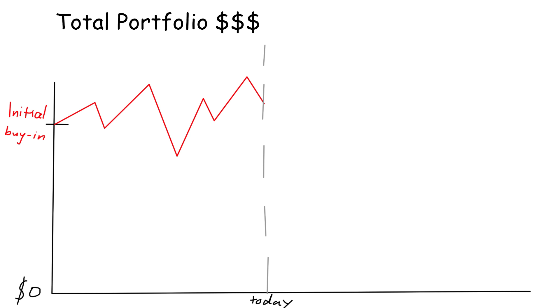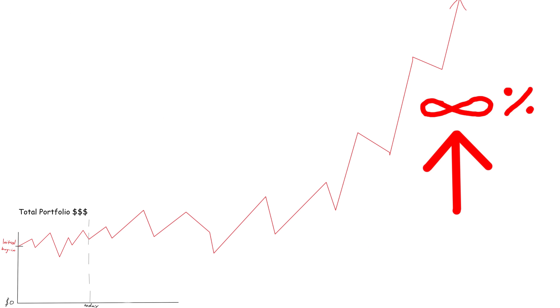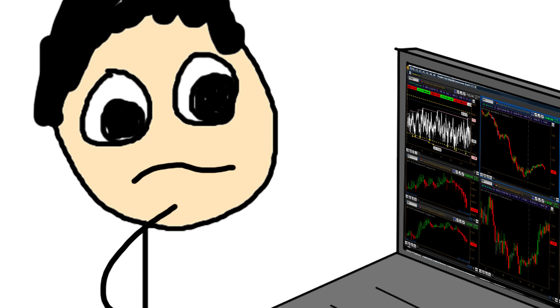You have to remember that your portfolio can only drop in value by 100%, while it can go up by way more than that. Which is why it's important to consider how to manage your money in the event you accidentally make a return on your investment of 10, 100, or 1000 times your initial buy-in. So you have to ask yourself: in the event you massively increase the value of your portfolio in a short amount of time, what's your strategy going to be to reinvest that money? There are actually a few different options with different pros and cons.